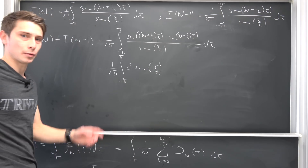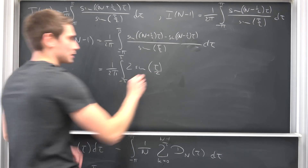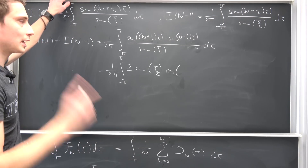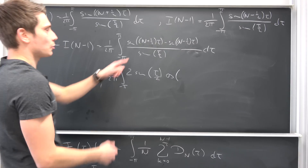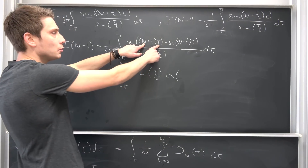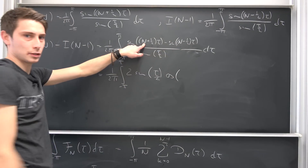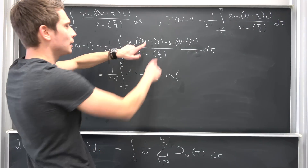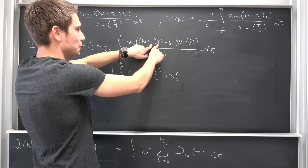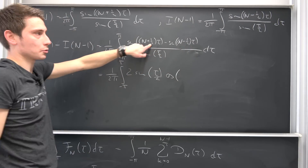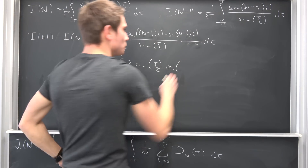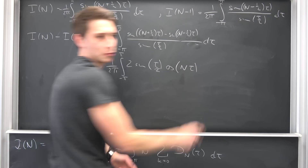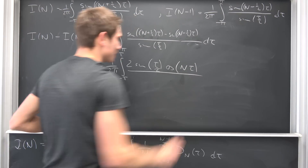We have (a minus b)/2 times the cosine of (a plus b)/2. So we have n times tau plus n times tau giving us 2n times tau, and then the tau/2 terms just vanish. So this gives us 2n times tau over 2, which is just n times tau. Take a piece of paper and try it out for yourself, as always.